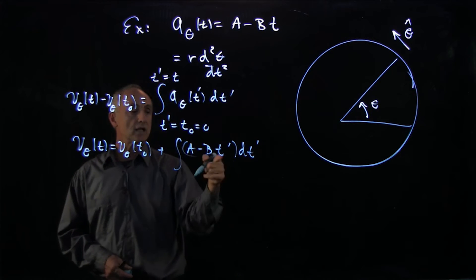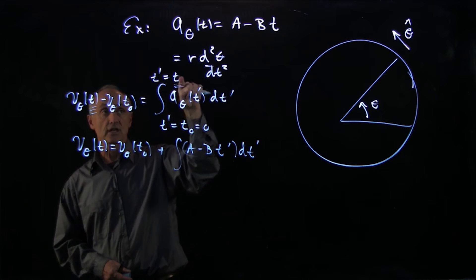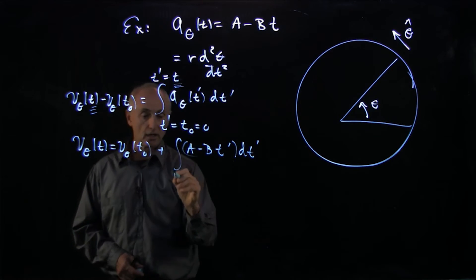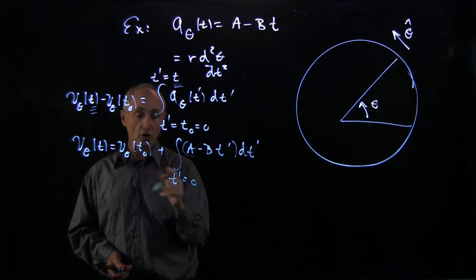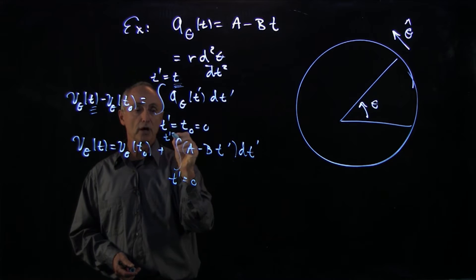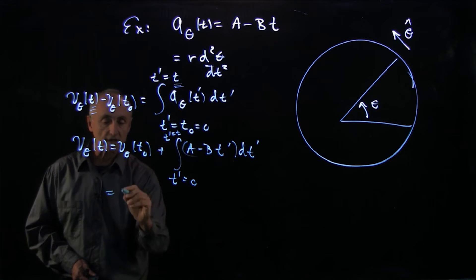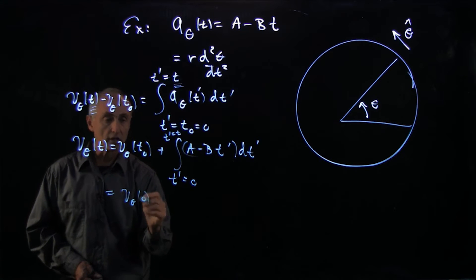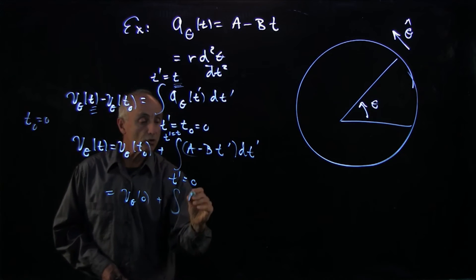Now, we needed an integration variable, because recall that our functional dependence is the upper limit of the integral. We saw that in one-dimensional kinematics. So we're going from some t₀ = 0 to some t' = t. Well, this integral is now, we'll write this v_θ0, where again t₀ we're calling 0.